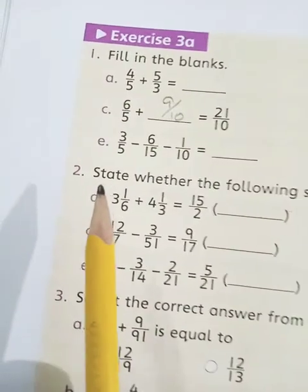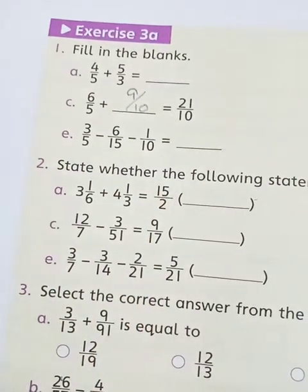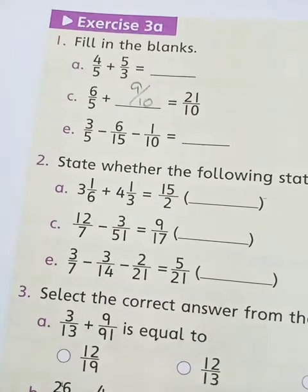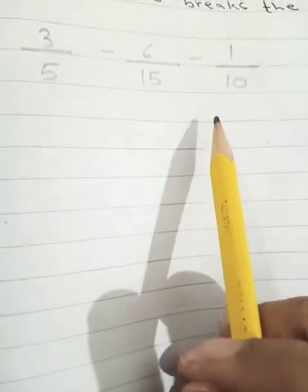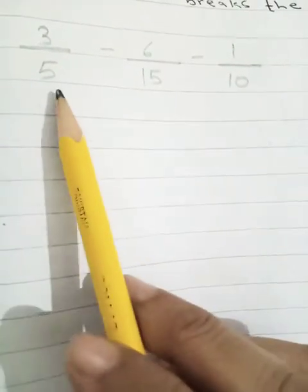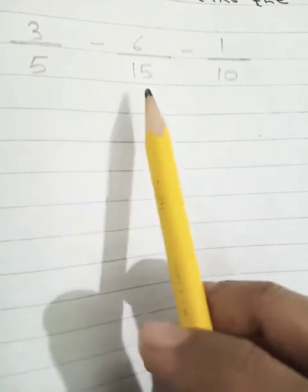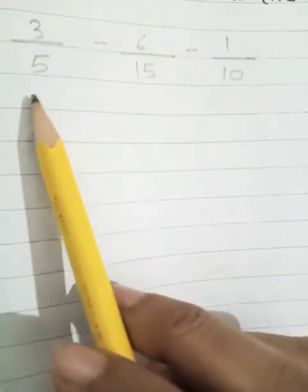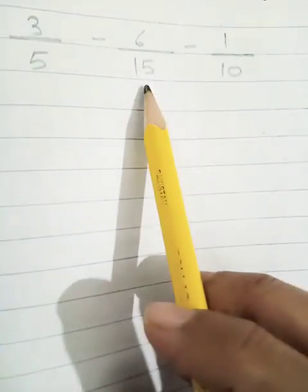Now come to part E. 3 upon 5 minus 6 upon 15 minus 1 upon 10. Let's do it. We have copied down the question. Now you see that this is a question of subtraction. But first make the denominator same. We have 5, 15, and 10. So which is the biggest denominator? 15.